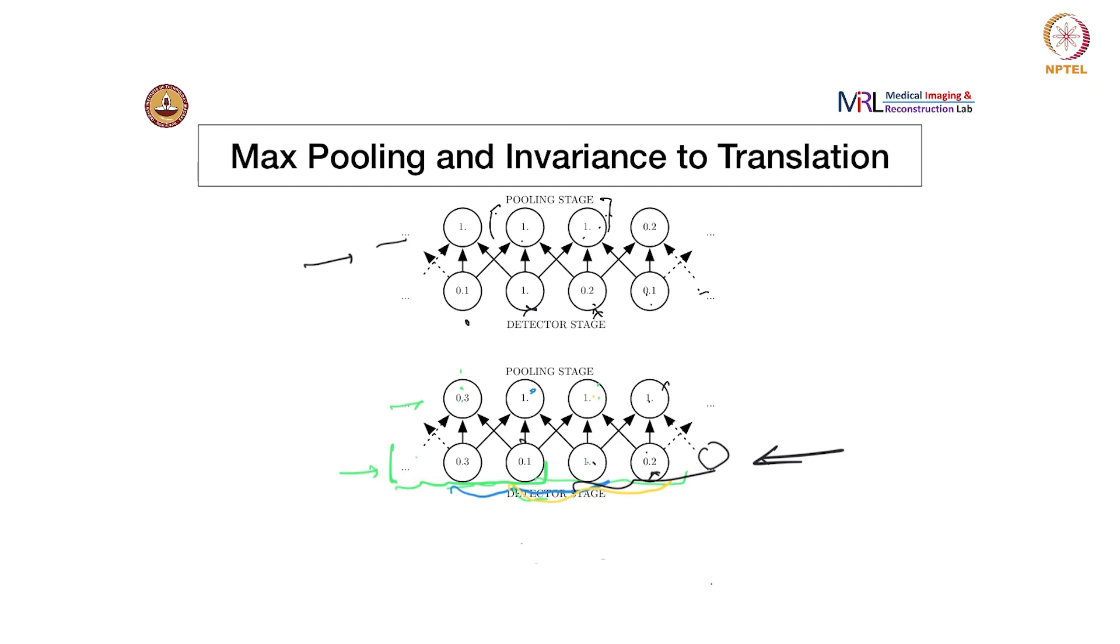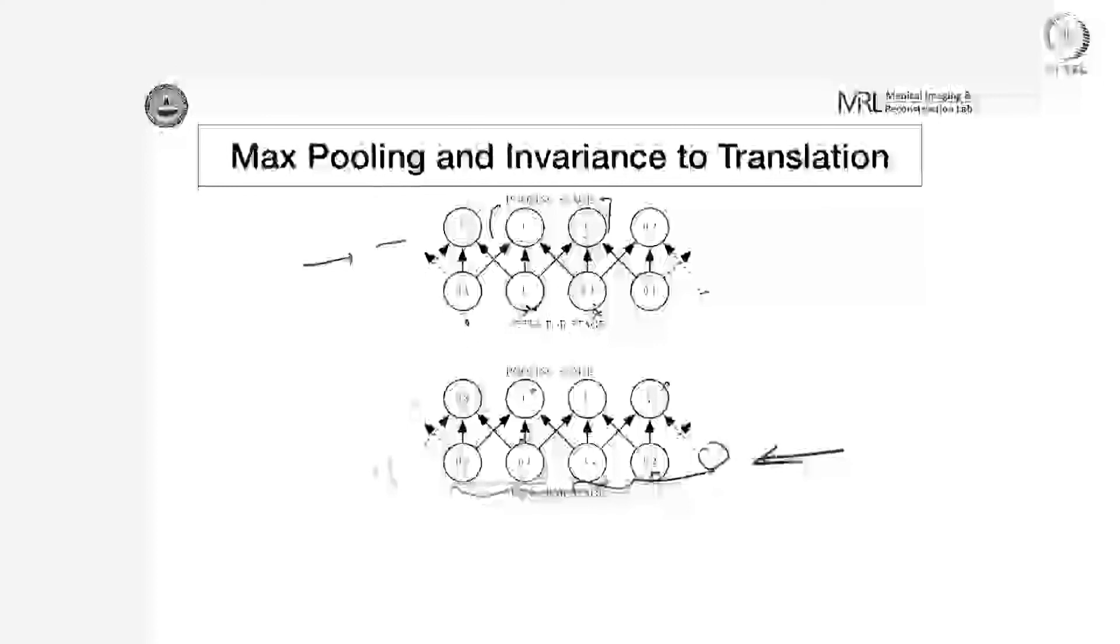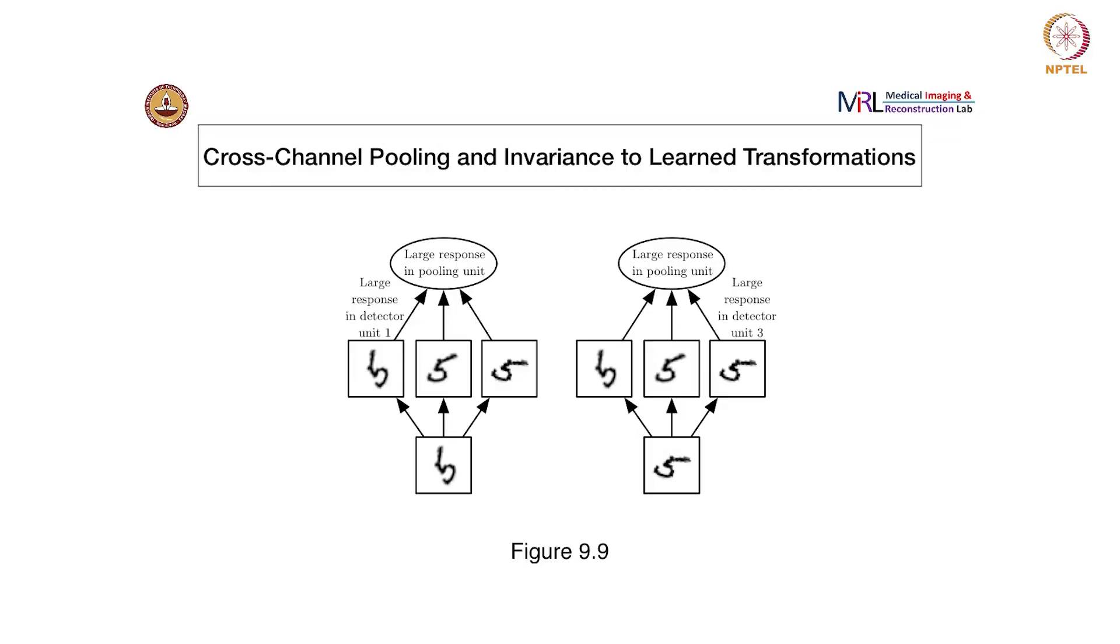There is another way to do pooling, which is across channels. That means that for every filter, there is an output, and if you do max pooling across different outputs of different features, then there are some invariances that we can get, for instance, rotations. Let's see how we can do max pooling across feature maps.